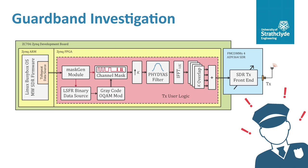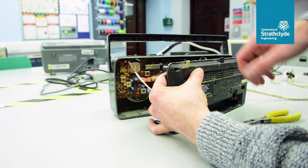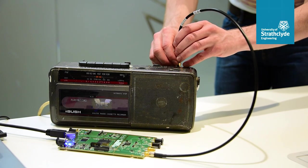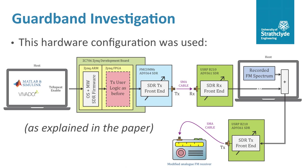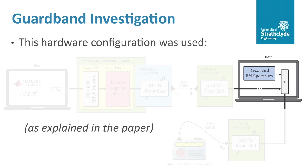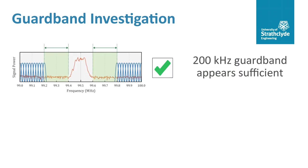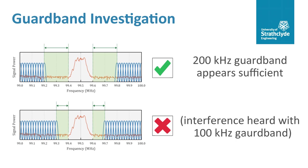As it would not be legal under current regulations to broadcast the FBMC signal on the RF spectrum, an old FM radio was sourced and modified. Its antenna was removed and an RF connector was installed instead. This allowed us to transmit the FBMC signal directly into the FM receiver with the hardware configuration shown. FBMC signals for various FM environments were generated on the Zynq SDR and these were then captured and recorded using a USRP. The signals were added to their respective FM environments and the combined signals then rebroadcast into the FM receiver. Initial findings indicate that a guard band of 200 kHz either side of an active station would be sufficient, as with this value no audible interference was detected on the retransmitted FM stations.